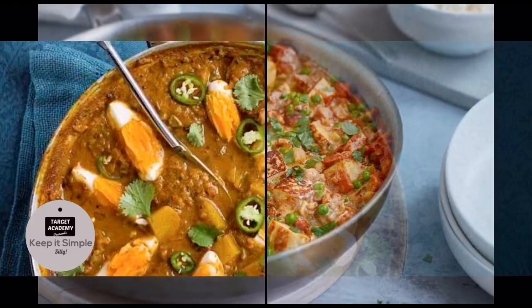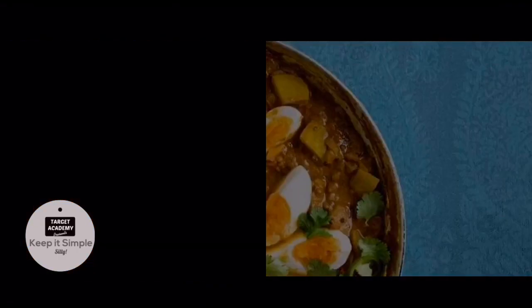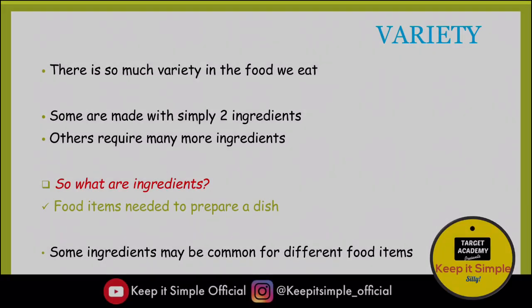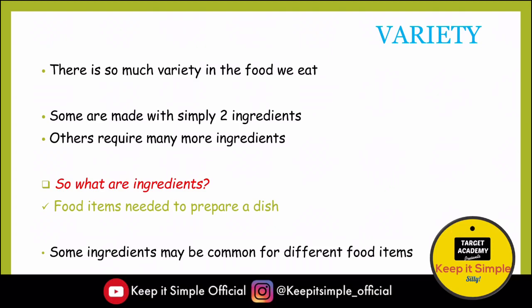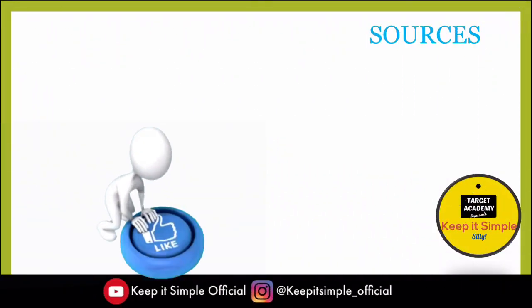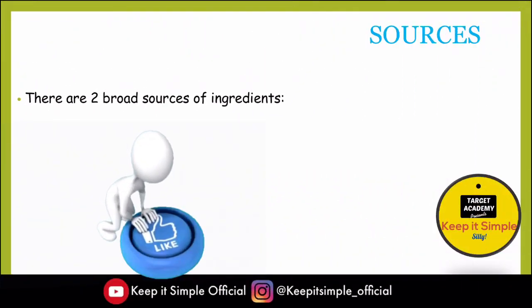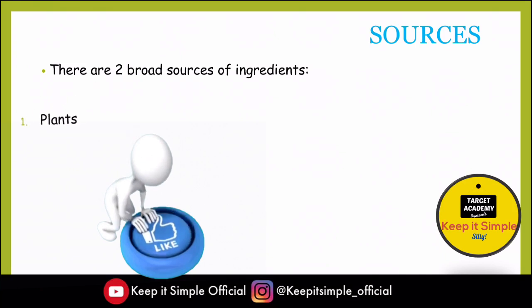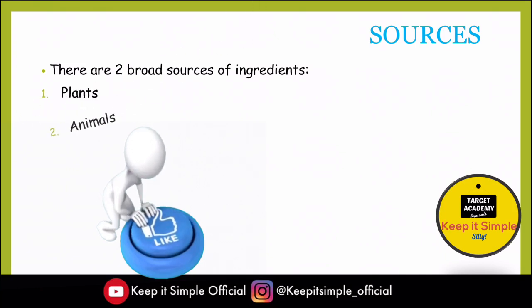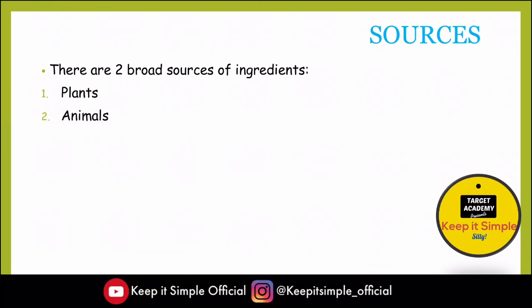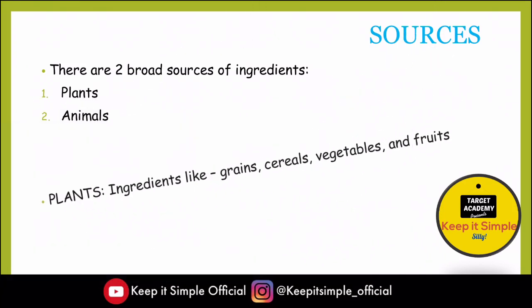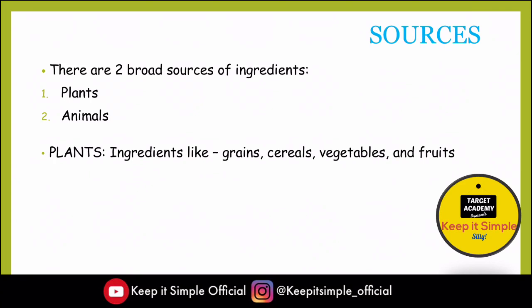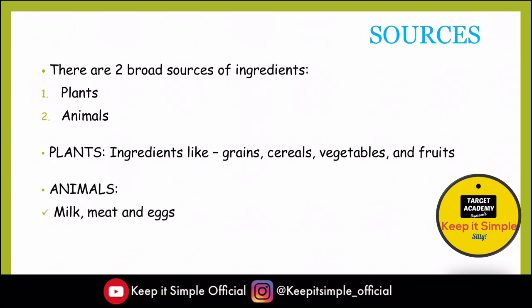For a vegetable dish you need ingredients like oil, spices, vegetables, etc. Now, we have to know the sources of these ingredients. There are two broad sources of ingredients: plants and animals. What are things we get from plants? Grains, cereals, vegetables, fruits. What do we get from animals? Milk, meat, and eggs.